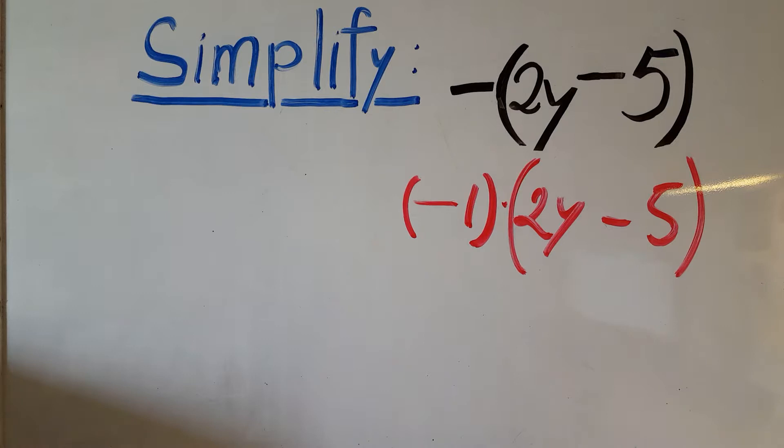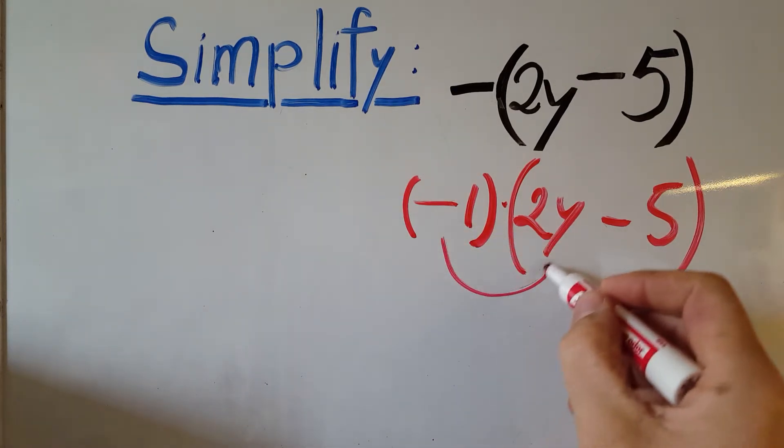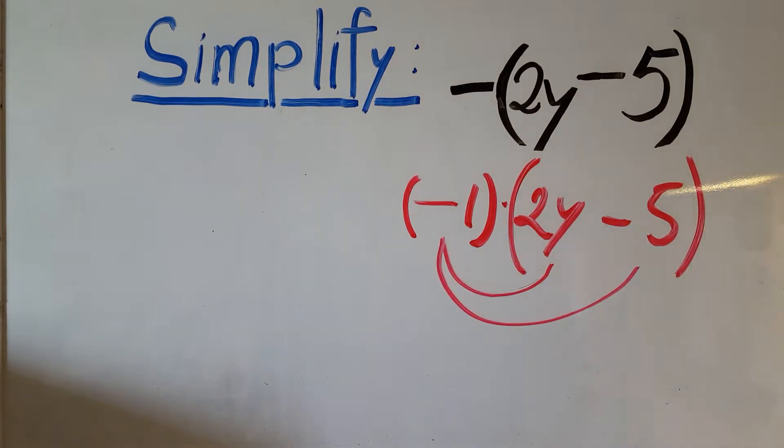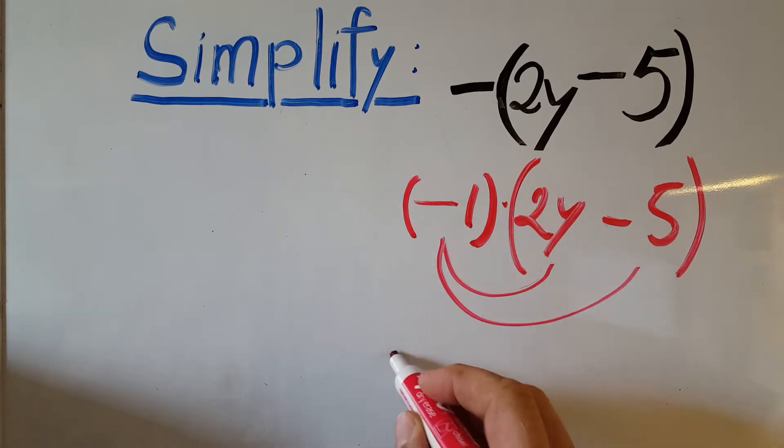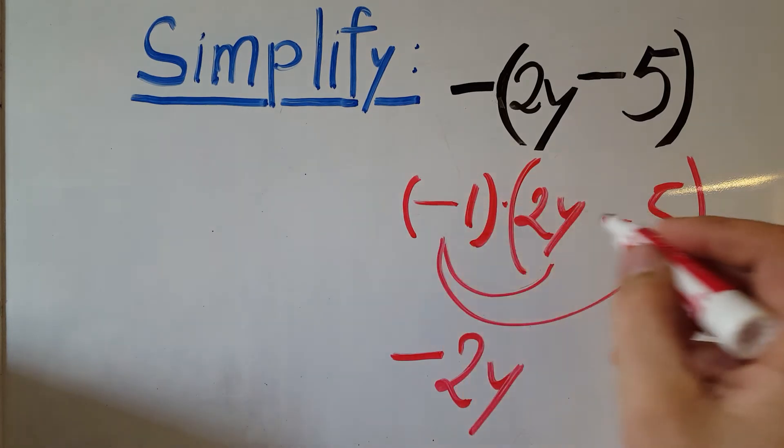And now we're gonna go ahead and multiply this one, multiply it here and multiply it here using the distributive property. So now negative 1 times 2y is gonna give us negative 2y. Negative times negative is gonna be a positive.